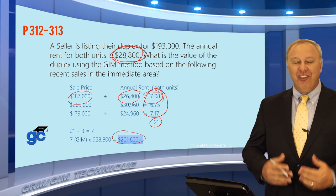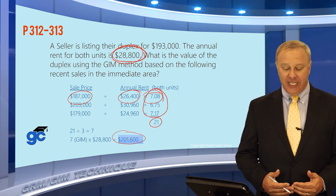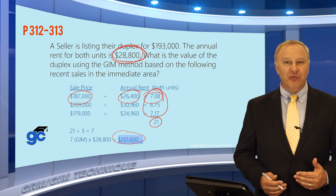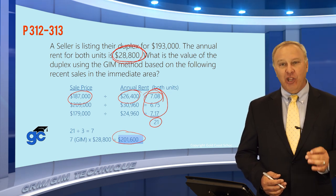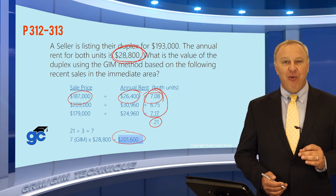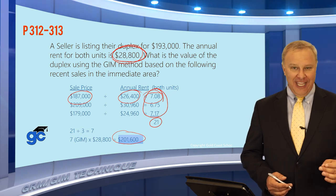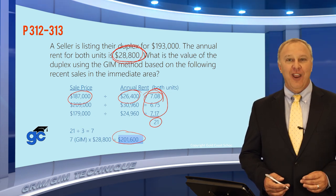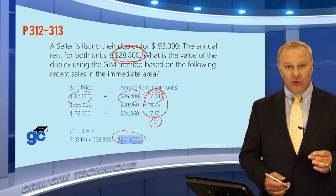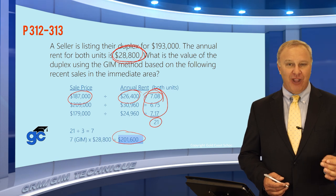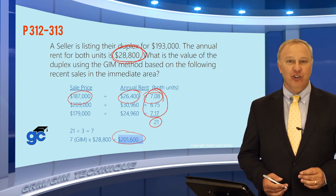One more thing to note on the GIM or GRM technique: in this question the multiplier was 7, which is a fairly low number. That means the property will sell for 7 times its annual income or annual rent. That's typically how a gross income multiplier is used — normally the income multiplier will be annual.